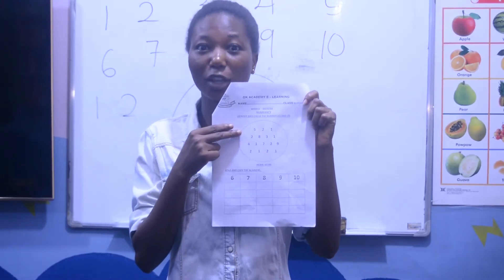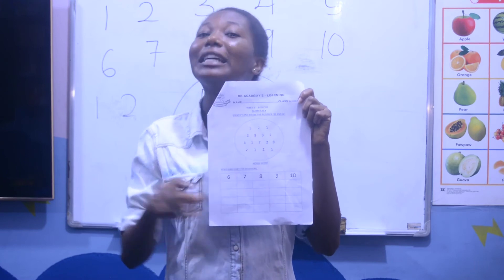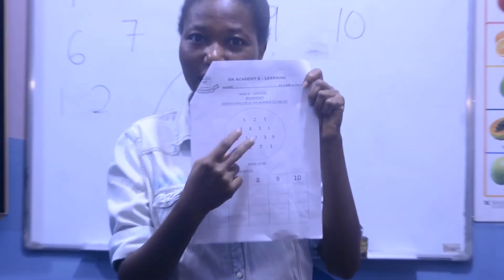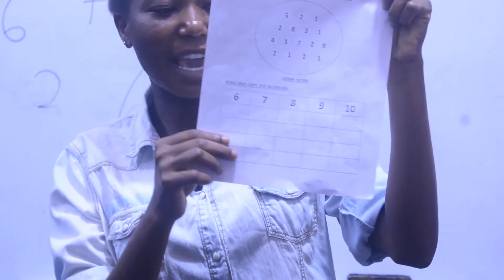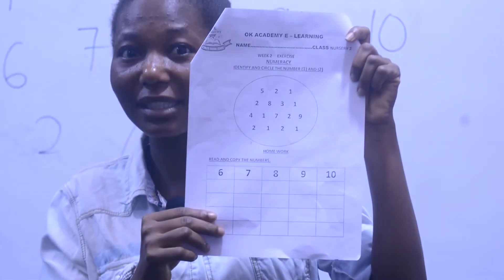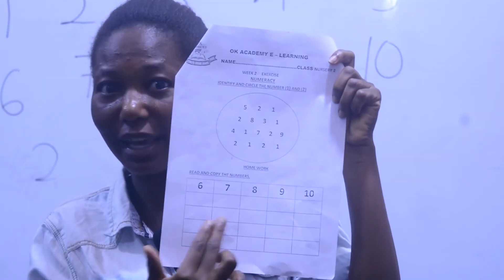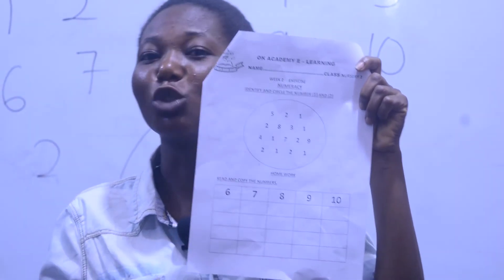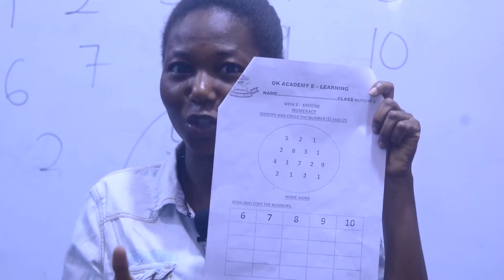All right kids, this is a classwork. So you are going to identify number one and two, then you circle it for me. And then down here, we are also having some numbers that you are supposed to write in the provided space over here. So you write it nicely and then I'll buy you a baked chocolate!